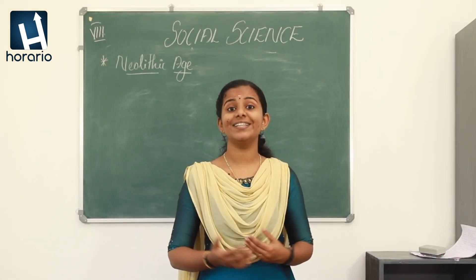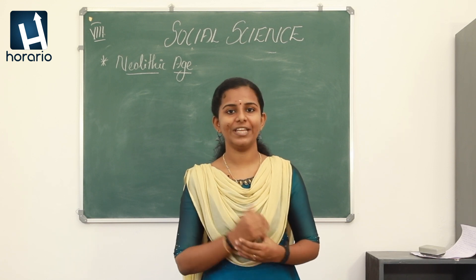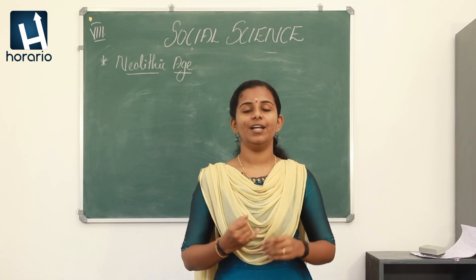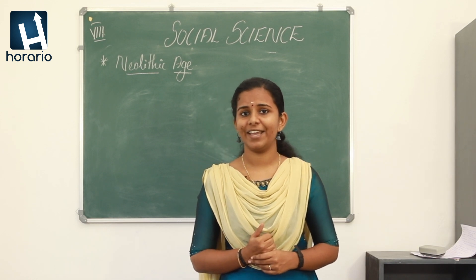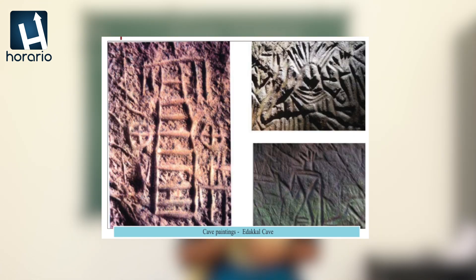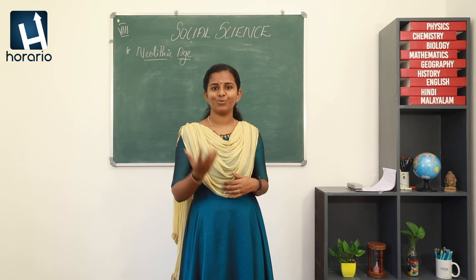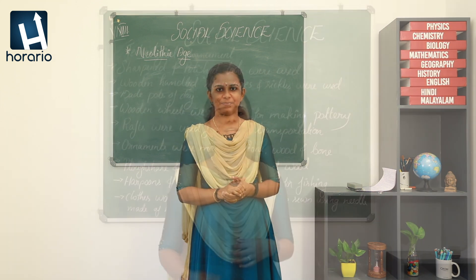Historian Gordon Childe termed these changes the 'Neolithic Revolution.' They started settled life for cultivation and also domesticated animals for food and farming. The major crops cultivated were wheat, barley, paddy, plantain, and jute. The Edical Cave in Wayanad is a major Neolithic site in Kerala. From its cave paintings we can identify a wheel cart, a dancing girl, and geometrical figures — showing they used wheels to carry goods.